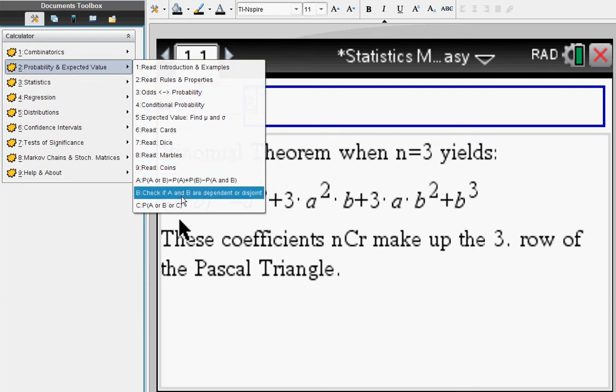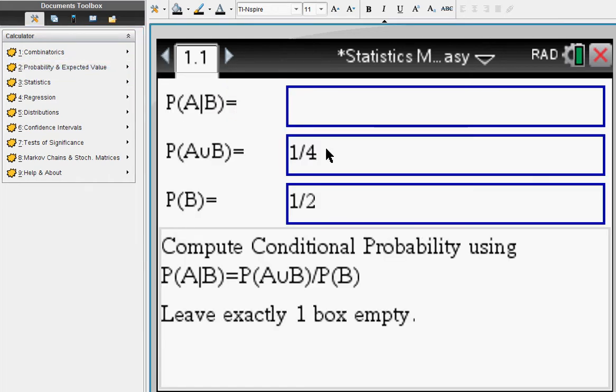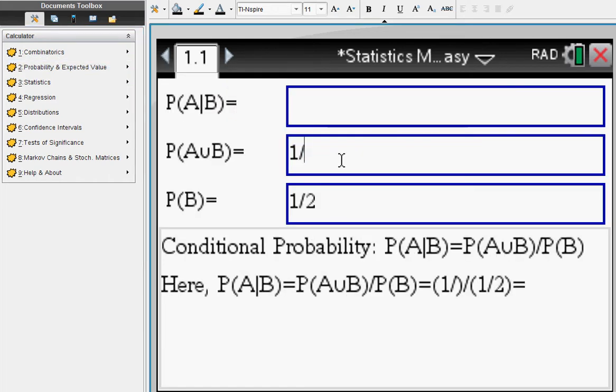Probability expected value. You can do, for example, odds of probabilities, conditional probability. So you just have your formula here of conditional probability.